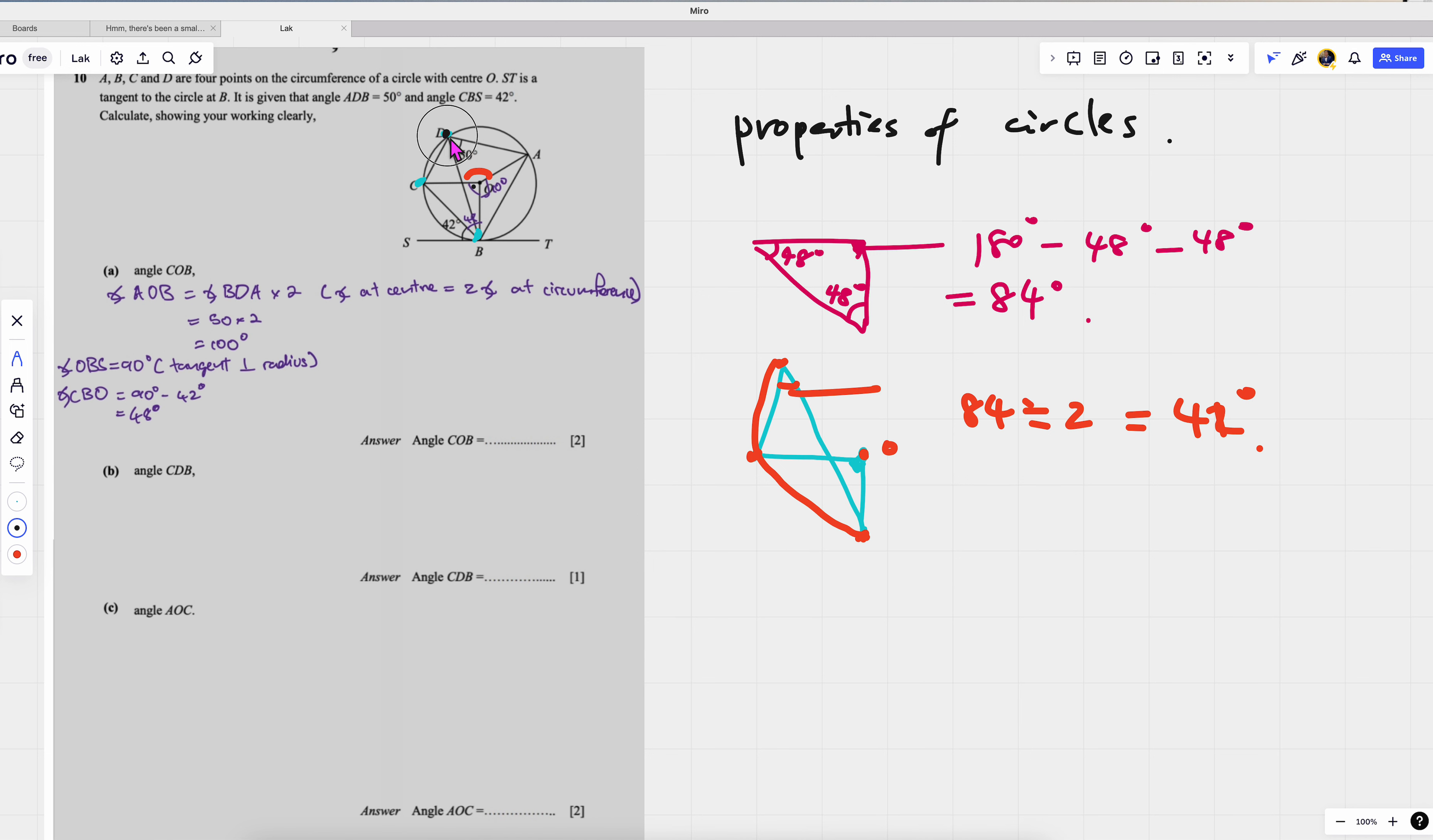So first you have three points, one, two, three. And then you are talking about this one. Now I can see. Oh yeah, you're talking about this one, right? Then this angle. Then you look like this. Very good.